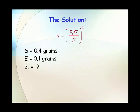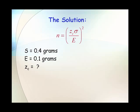So the solution, we know that S is 0.4 grams, and we can use S for sigma. Since we had a preliminary sample of 200, we want our margin of error to be 0.1 grams, but we need a Z sub C to substitute into our formula.